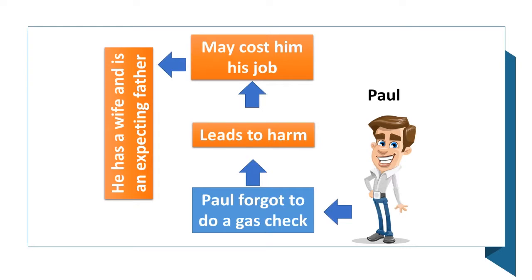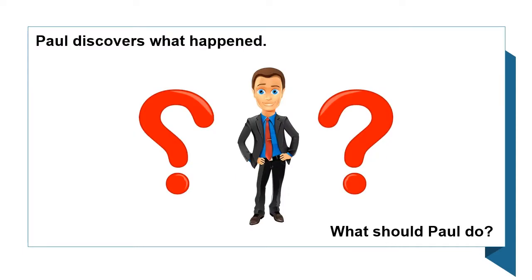One day on the job, Paul forgot to do a gas check. Missing this gas check created a leak that was caught early on, so the damages were mostly financial. If Paul gets caught, he might lose his job for this mistake. Paul cannot afford to lose his job, as he is an expecting father and has a family. While John was doing some of his routine duties, he realized that the leak can be traced down to the gas check that was missed by Paul. John is now conflicted — should he expose Paul, or should he stay silent and cover it up because he owes Paul?